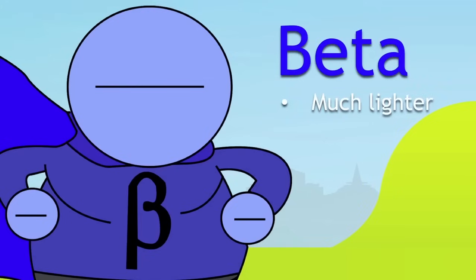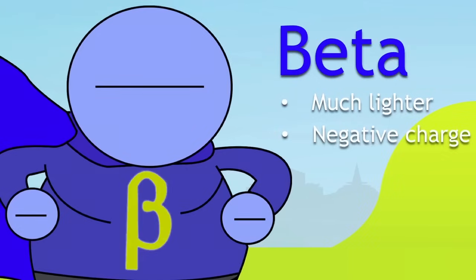It's much lighter than alpha radiation and the particles have got a negative charge as opposed to a plus two charge on the alpha radiation. This is a symbol for beta radiation.